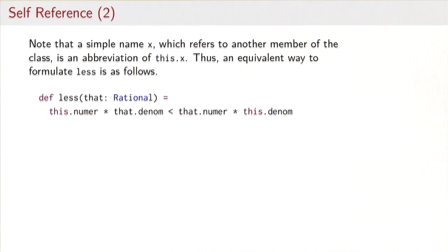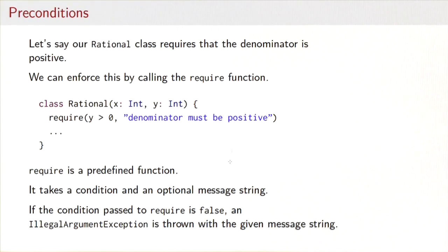So now that we're there we can actually make a further simplification. If we refer to a name x in a class, that's really just an abbreviation for this.x. So the members of a class can always be referenced with 'this' as the prefix. So an equivalent way to formulate the less method is as follows: this.numer times that.denom less than that.numer times this.denom. And together with the choice of our parameter name now you see why we've called it 'that'. That gives us a nice symmetry in the operations between the left operand and the right operand.